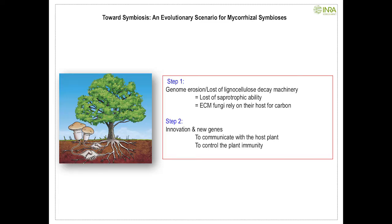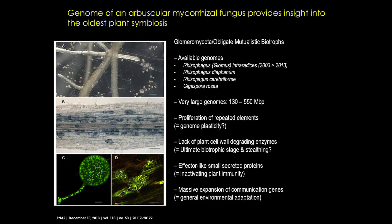So if I try to summarize: we have a very interesting evolutionary pattern. Ectomycorrhizal fungi evolved using two different contrasting patterns. They have lost their ability to decay lignocellulose — and they have to lose this ability if they don't want to eat the roots hosting them and elicit plant defense reactions. At the same time, they are also able to create and innovate, producing new genes used to control plant immunity. So they are evolving by gene loss while also generating novel effector genes.